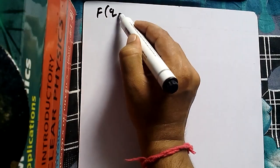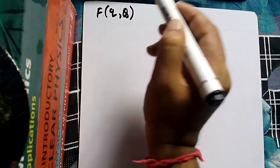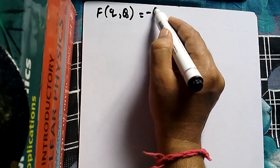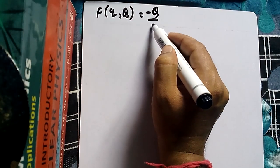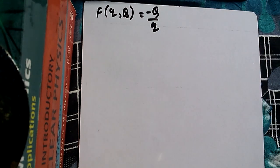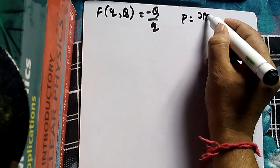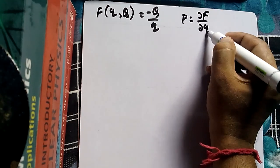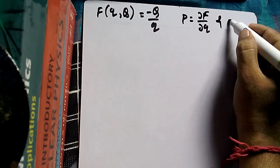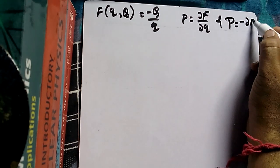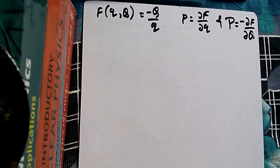Now in our problem, the generating function is given as F equals minus capital Q divided by small q. Since it is a function of small q and capital Q, we use: small p equals del F by del q, and capital P equals minus del F by del capital Q.